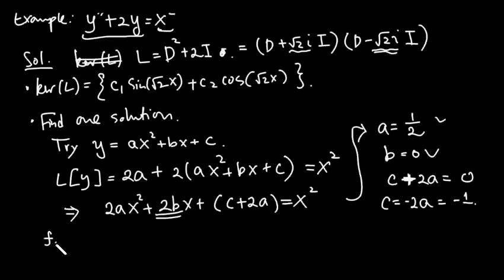So therefore, our f0, so-called particular solution, is 1 half times x squared, that's our a value, and b is zero, and c is negative 1. So you can verify that again. If you stick that function and differentiate 2 times and add 2 times of this original function, only x squared will survive. So this is the solution, particular solution.